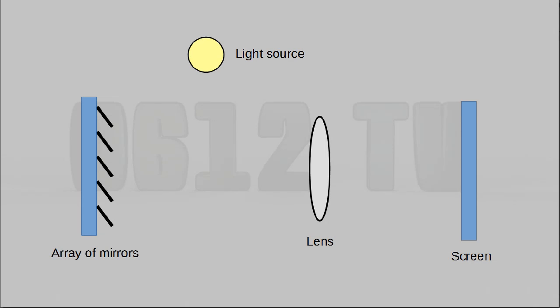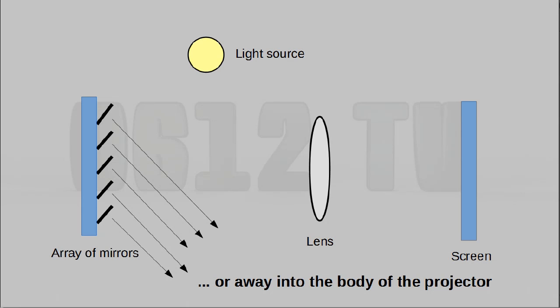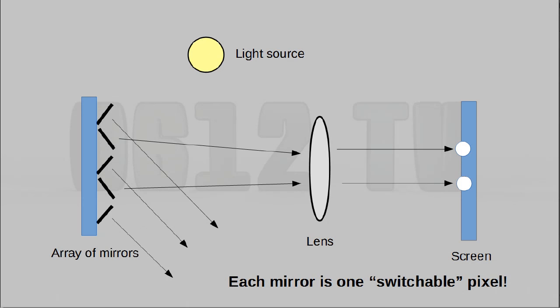Let's move on to our second somewhat historical display technology. This is called DLP, also known as digital light processing. This one is very interesting — it tends to be used in projection systems the most. Basically, you have a chip, and the chip controls an array of micro mirrors. You have a separate light source, and what happens is the chip can sort of move the mirrors to reflect the light from the light source out towards a lens, or back into the body of the projector itself onto a heatsink. This mechanism is how individual pixels are actually switched on or off.